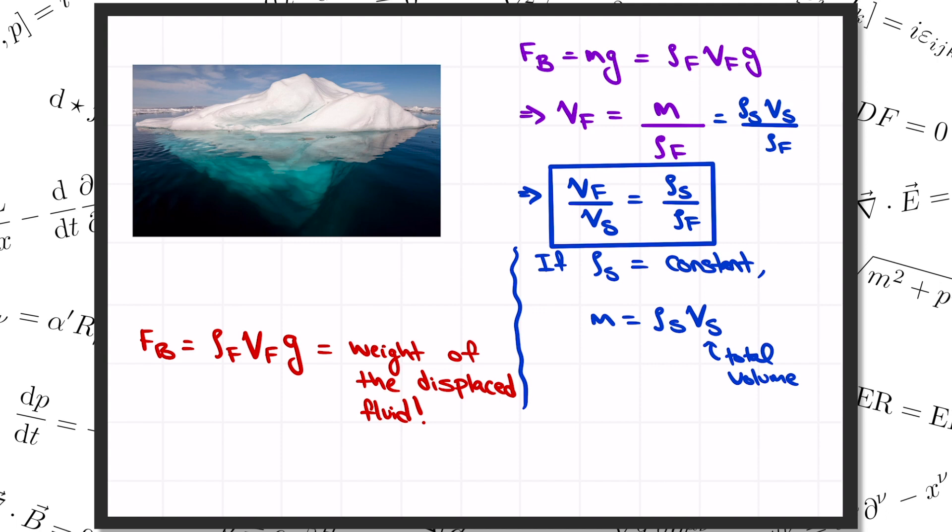This is a beautiful result. It tells us how deep under the surface of a fluid that an object is going to sink when you float it on top. It also tells us something that you already probably knew. The object can only float if its density is less than the density of the fluid.